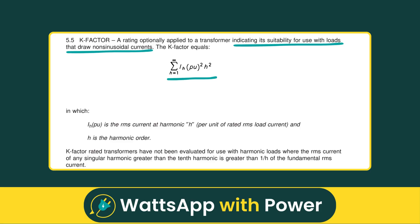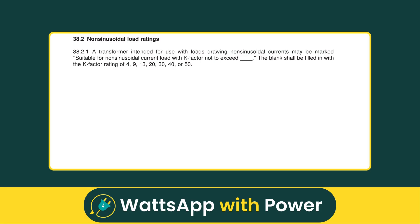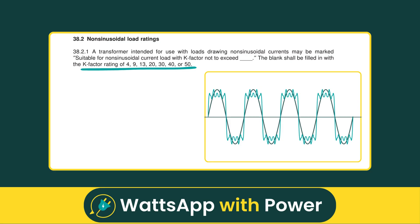K-factor values typically range from 1 to 50. UL recognizes standard values of 4, 9, 13, 20, 30, 40, and 50, depending on how much harmonic content the transformer is designed to handle.